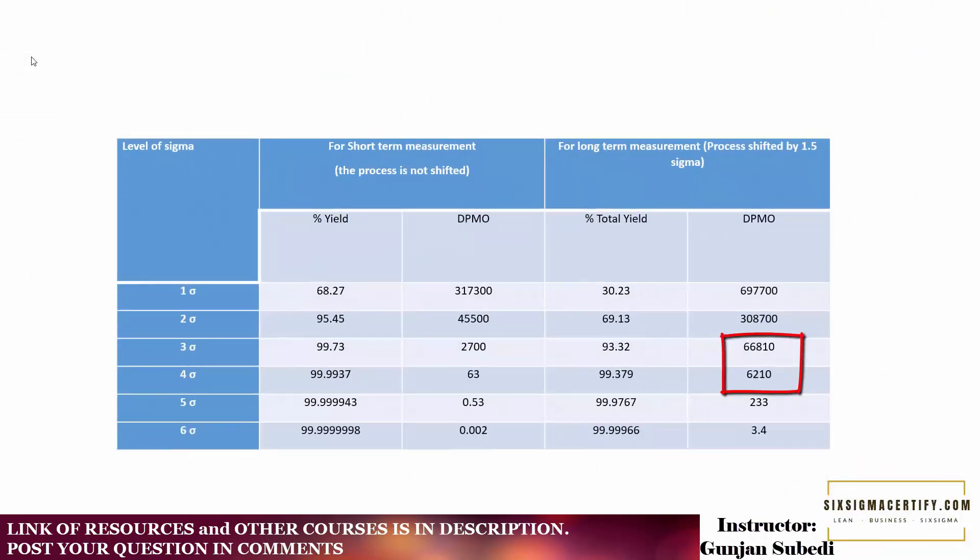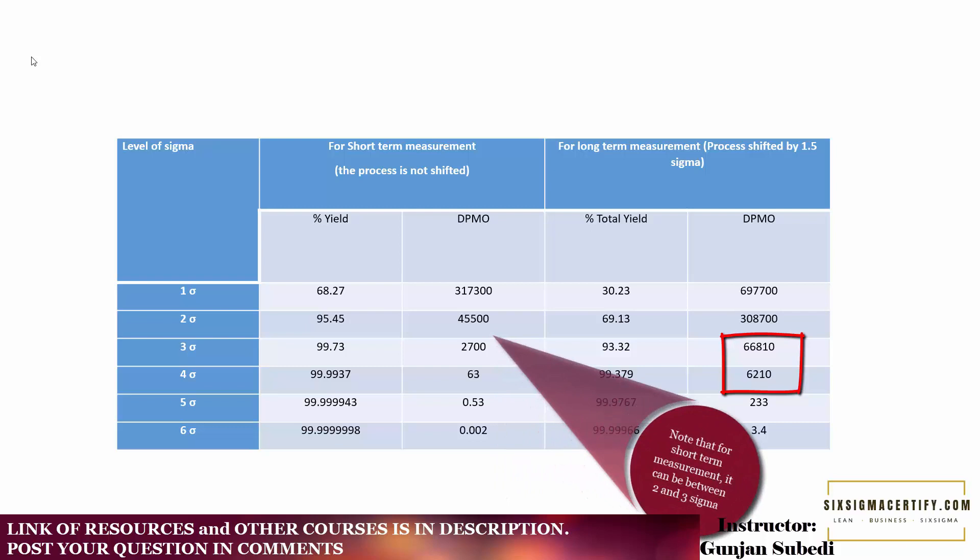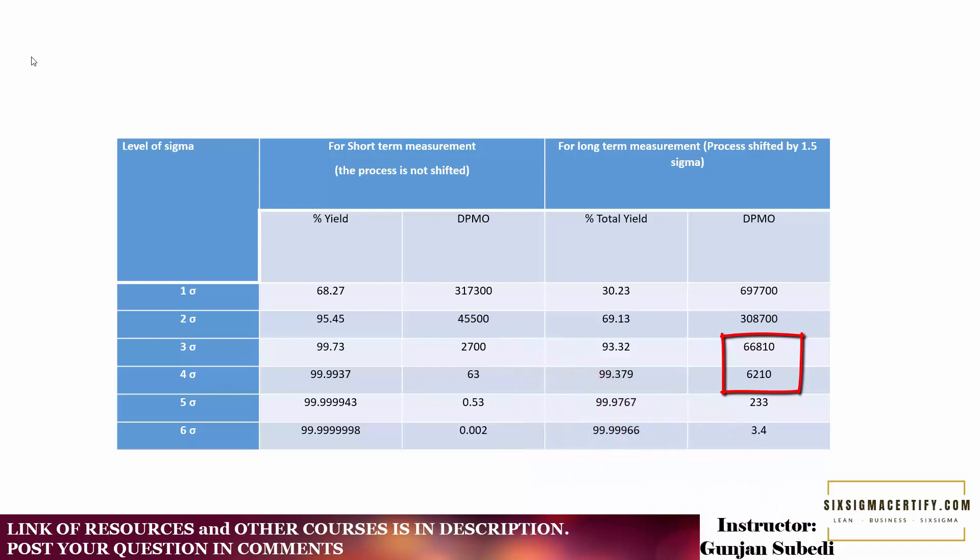Our defect level is 33,000. So our level of Sigma lies between 3 Sigma and 4 Sigma. It lies somewhere in between. So in the measure phase, if this is the scenario, you know that your Sigma level or your present performance level is between 3 and 4 Sigma and you have to increase that up to 6 Sigma level.